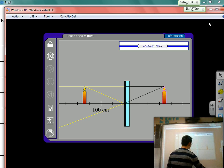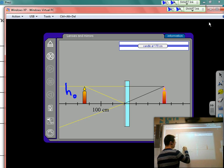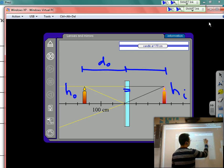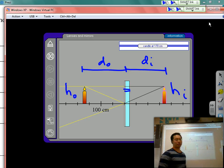So the height of the object is going to equal the height of the image. And also understand that the distance of the object from the mirror is going to equal the distance of the image from the mirror as well.